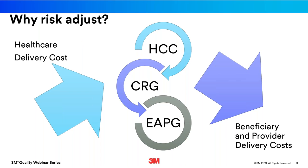Through the evolution of healthcare payment over the past 20 years, many people at CMS, HHS, and in clinical research have tried to determine how to get a population's disease burden under control. Risk adjustment techniques — whether HCC, CRGs, or EAPGs — can address increasing healthcare delivery costs, which represent high percentages of our gross domestic product, and reduce those costs such that beneficiaries have lower costs to receive care and providers have lower overall costs to deliver it.